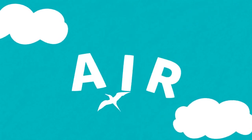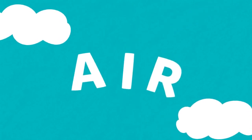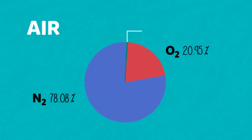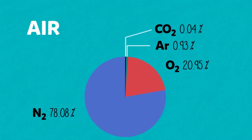The approximate composition of the air today is 78.08% nitrogen, 20.95% oxygen, 0.93% argon, 0.04% carbon dioxide, and between 0 and 4% water vapour.